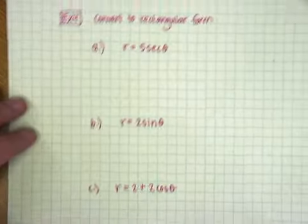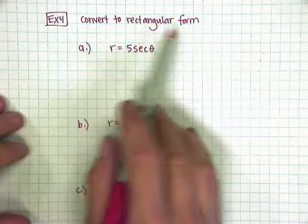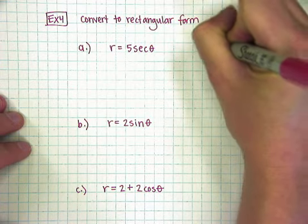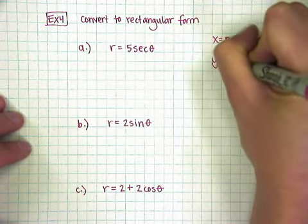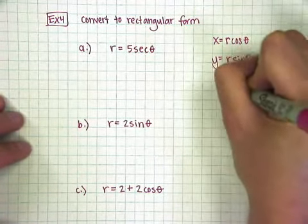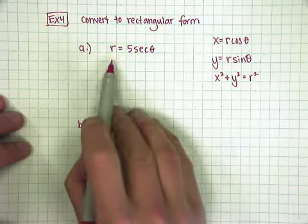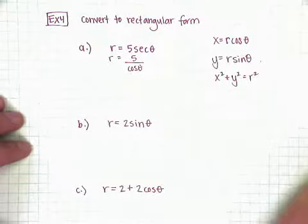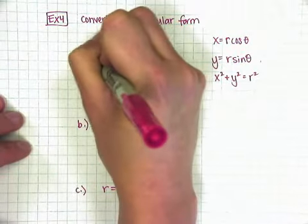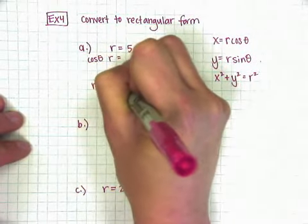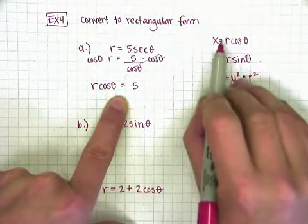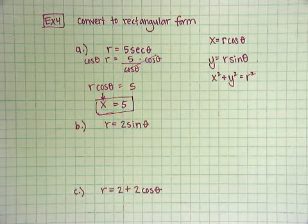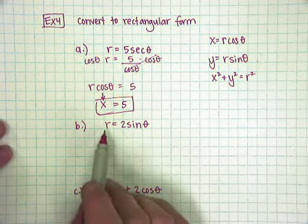One last example is how to convert, and I guess this is sort of cheating with calling it example 4, because I've got 3 here, but converting to rectangular. So now I have an equation in polar, and I want to go to rectangular. So again, we're going to use the fact that x equals r cosine theta, y equals r sine theta, and also the Pythagorean identity, x squared plus y squared equals r squared. So here, I have r equals 5 secant. Well, secant is 1 over cosine, so this is 5 over cosine theta. And then if I multiply both sides by cosine theta, the cosines cancel, and I get r cosine theta equals 5. But if you notice, r cosine theta is equal to x, and so I can sub in x here, and I get x equals 5. Which is my answer. As soon as you get rid of the r's and the thetas, then you're in rectangular form.